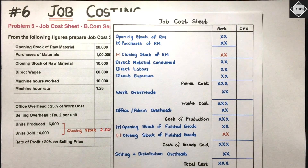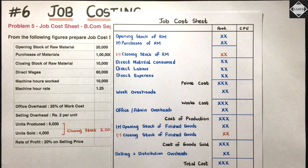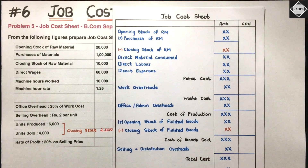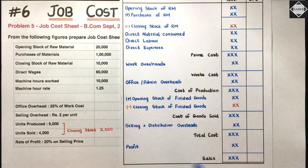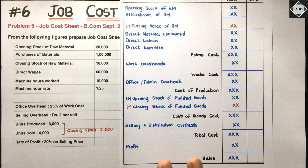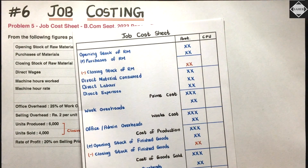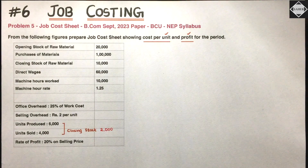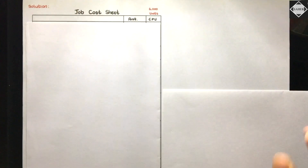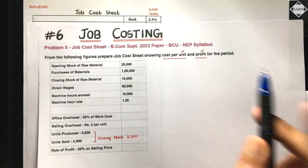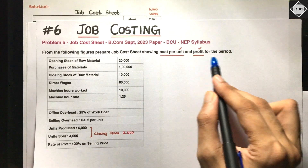When you do that you will get cost of goods sold. Then add selling and distribution overheads to get total cost, then profit, then sales. So you add profit to get sales. In this question they have also asked cost per unit, so we need a CPU column as well. They are asking specifically for cost per unit and profit for the period. So let's just solve this question now.